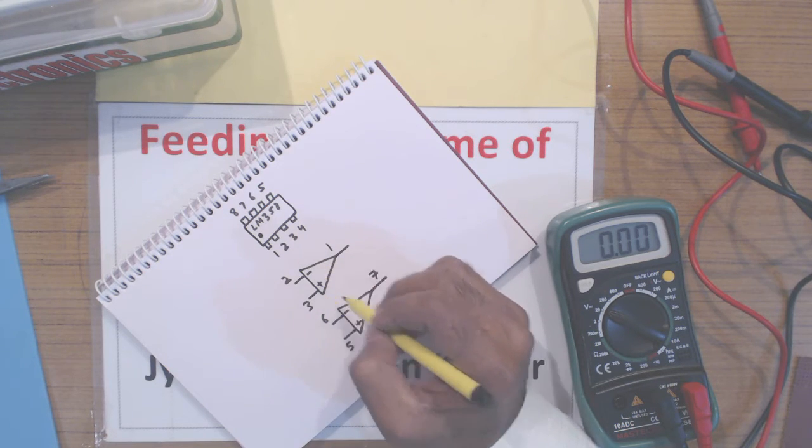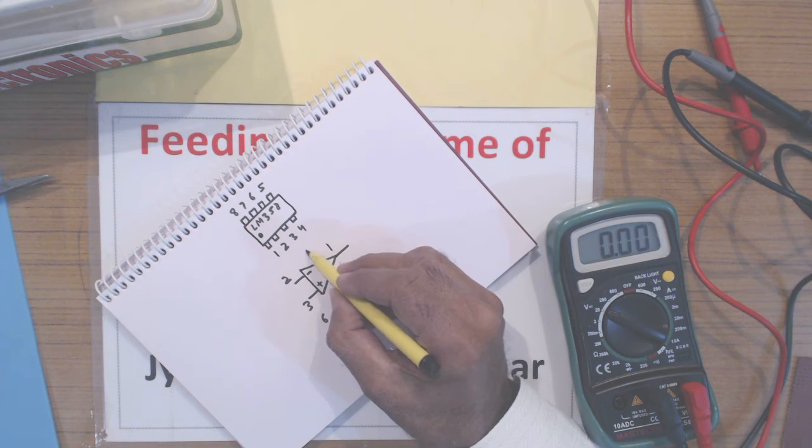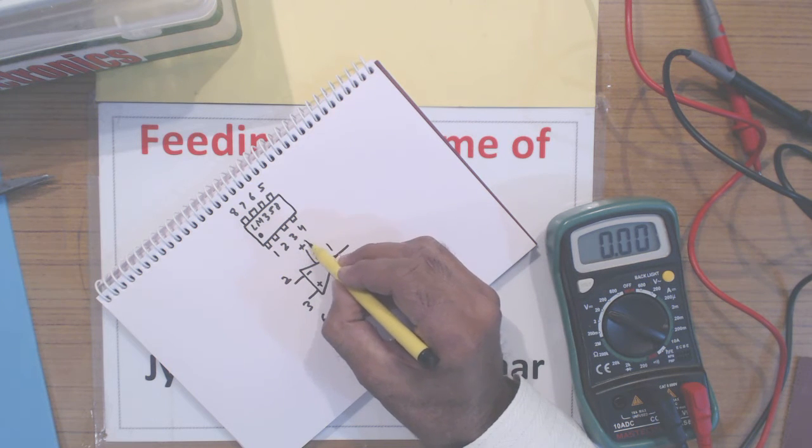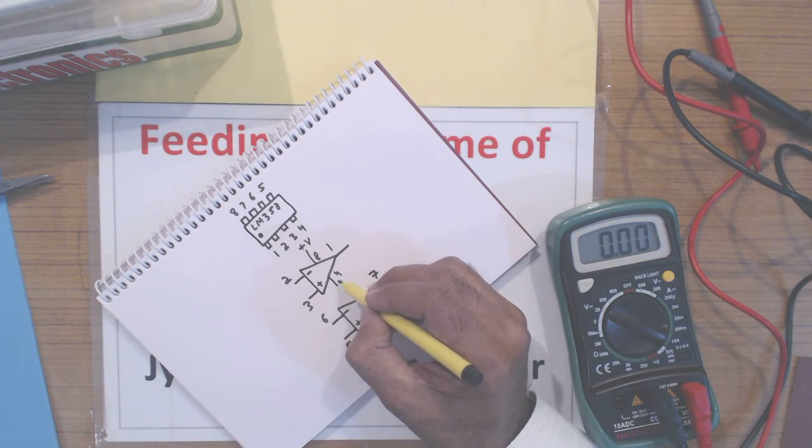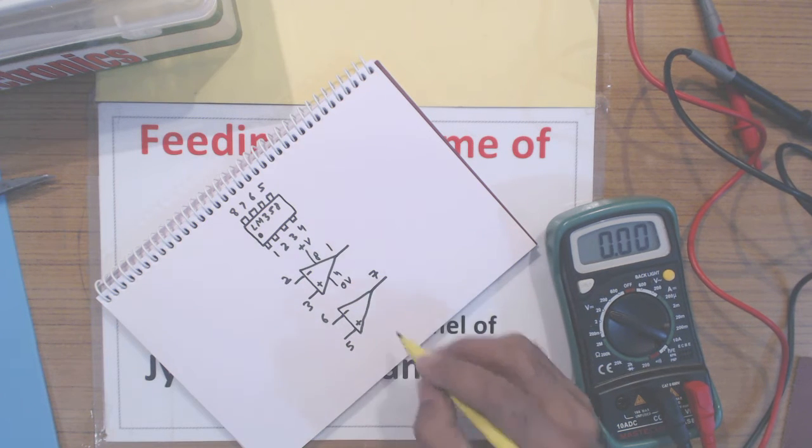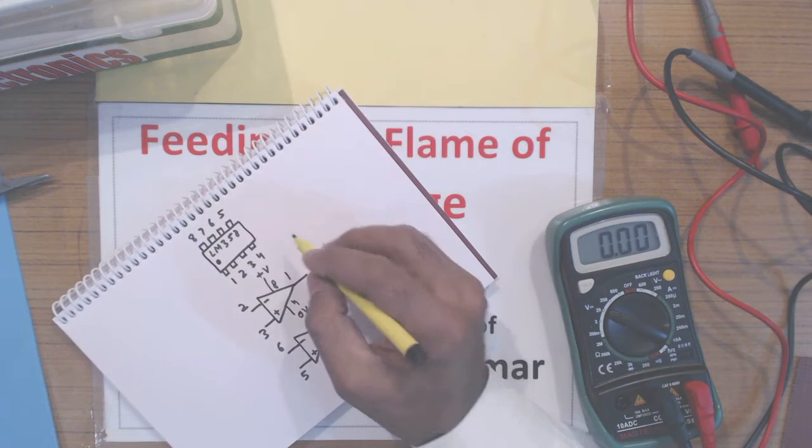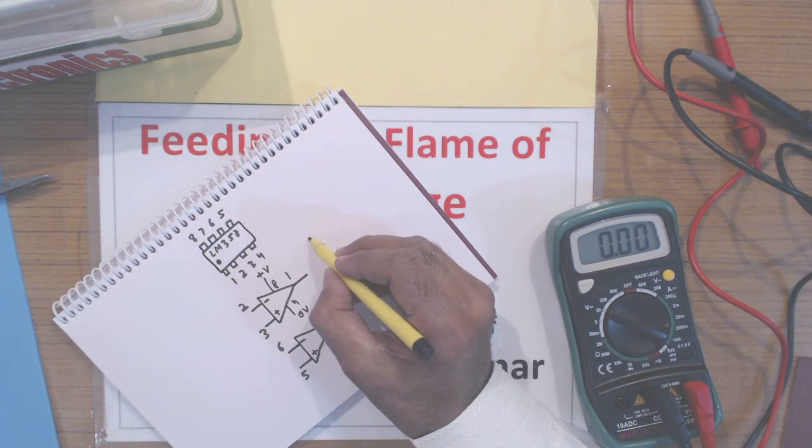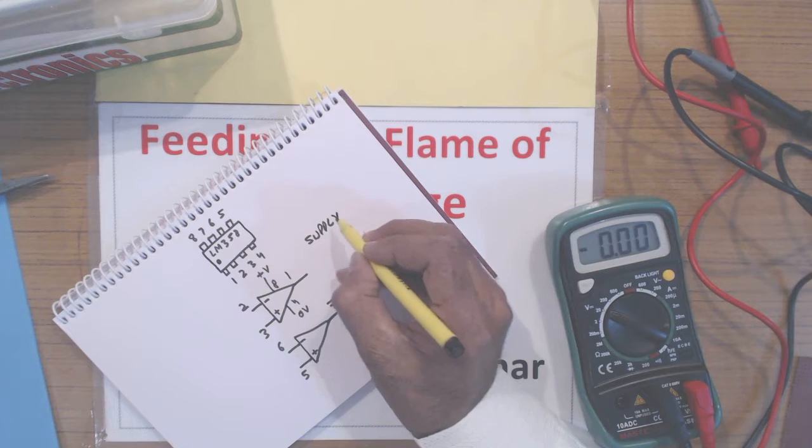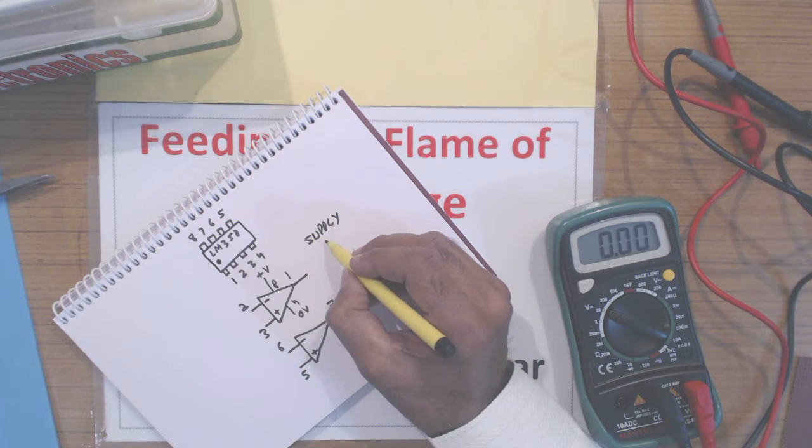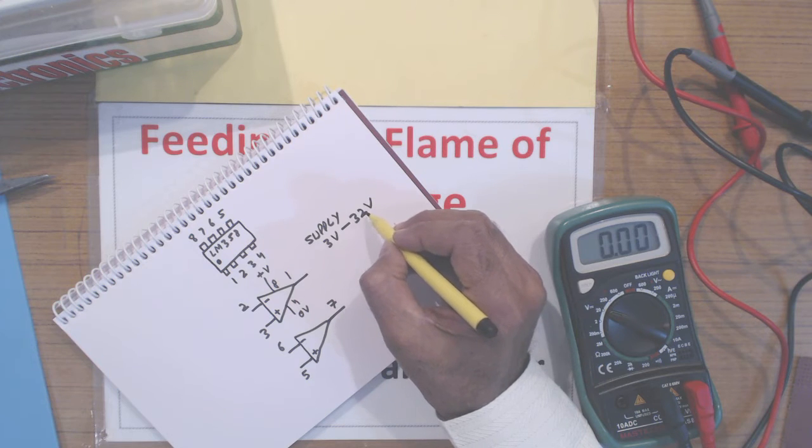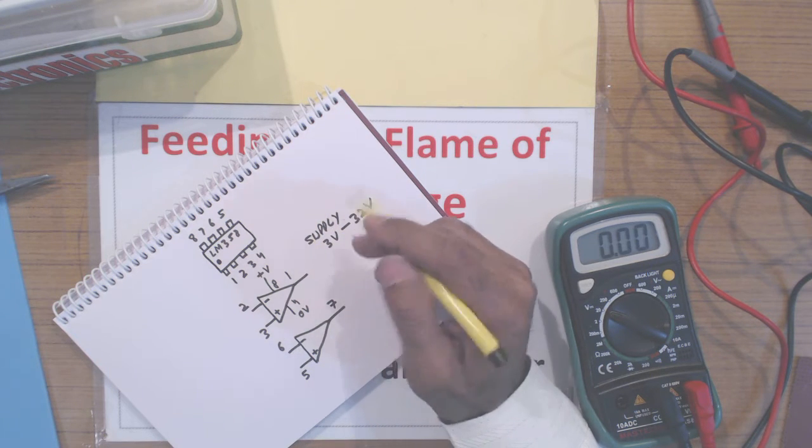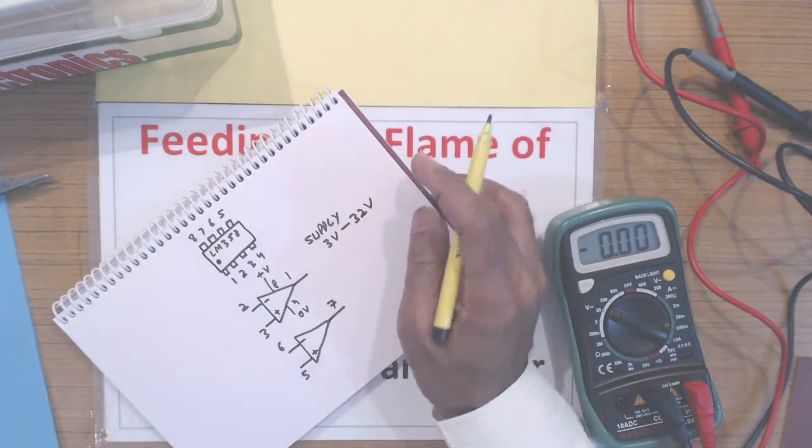Supply is common for both operational amplifiers. Pin number 8 is positive supply and pin number 4 is ground or 0 volt if you are using a single supply. For single supply, the LM358 can use from 3 volts to 32 volts anywhere in this range. I am using 5 volt; you can use 6 volt, 9 volt as you like.